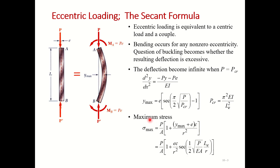The maximum stress is equal to P/A times [1 + (ec/r²) · secant(Le/2r · √(P/EA))]. Here c is the distance of the outer fiber from the center, and r is the radius of gyration. This is the secant formula, which is used to analyze different slenderness ratios.